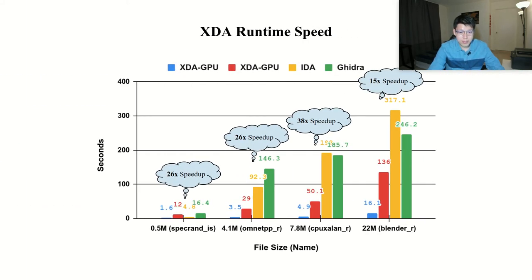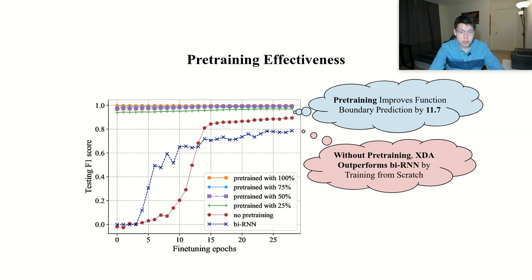We evaluate XDA's inference time on both GPU and CPU and compare it with IDA and Ghidra, two non-ML-based tools. We observed that XDA running on GPU is up to 38 times faster than IDA and Ghidra. We also conduct ablation studies to show the effectiveness of pre-training. We find pre-trained XDA outperforms that when it is not pre-trained by 11.7% F1 score. Moreover, we find that even without pre-training, which means XDA is also trained from scratch, just like bidirectional RNN, it still outperforms it after 30 epochs. This implies our model architecture alone is more effective for disassembly, likely due to the adoption of self-attention layers.